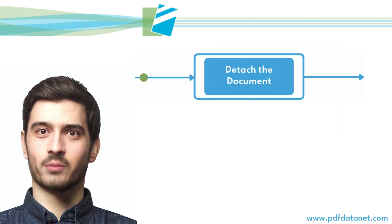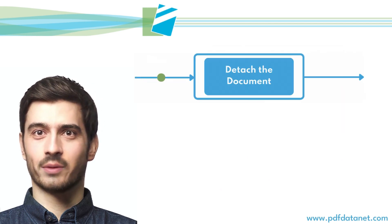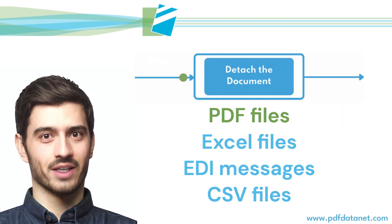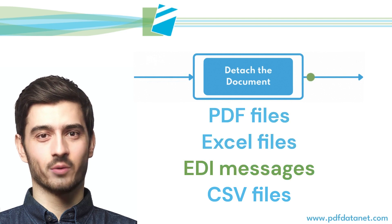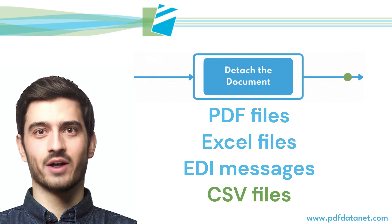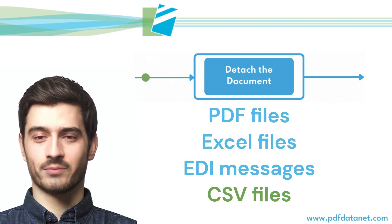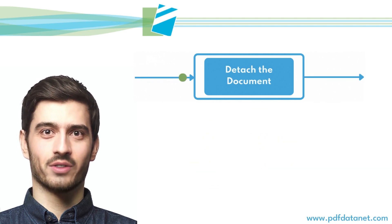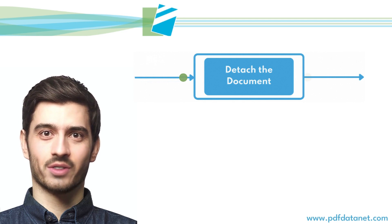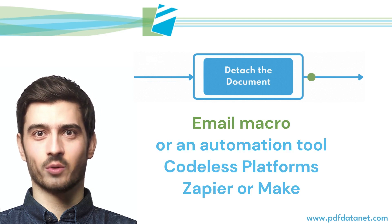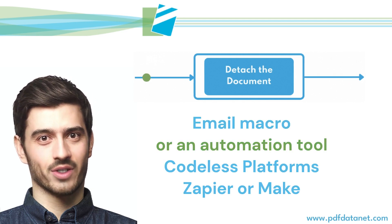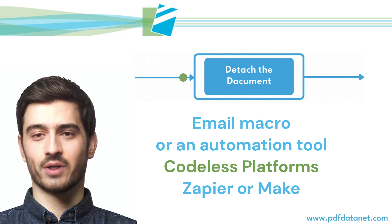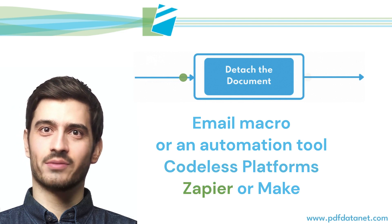The documents attached to the emails can be PDFs, Excel, EDI, or CSV files. To automatically detach the document, we use an email macro or business process app such as Codeless Platforms, Zapier, or Make.